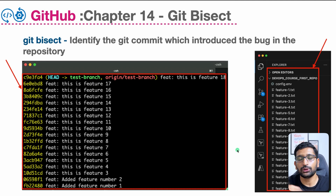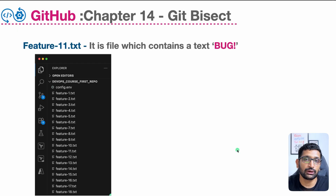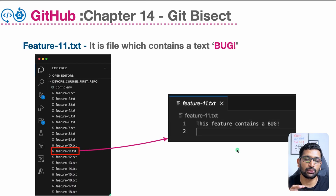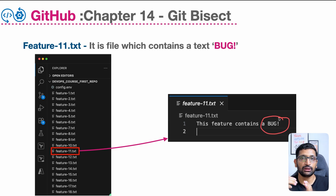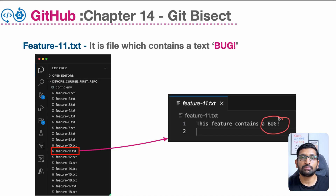First of all I'm going to tell you where I have introduced the bug. If I take a look onto this particular slide, you will see that I have highlighted the feature number 11 text file — this is where I have introduced a bug inside my code. The text of this file specifically contains a word which is called 'bug', and I have done commits for each file so I have a really long history from feature number one to feature number 18, and feature number 11 is the one where I introduced the bug.